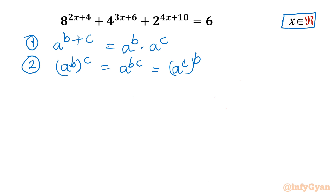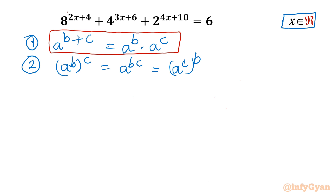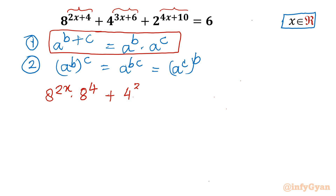Now let us solve this equation with Property 1 first. You can see there is summation in the exponents, so I will split the powers. I can write the equation as 8^(2x) × 8^4 + 4^(3x) × 4^6 + 2^(4x) × 2^10 = 6.